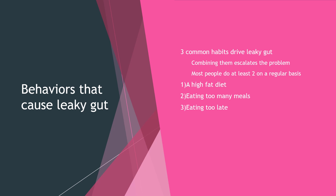A lot of people focus on diet as a primary driver of leaky gut, but I don't believe that's the case — I think a lot of this has to do with circadian rhythms. There are three common habits that drive leaky gut, and combining them escalates the problem. I'd almost guarantee that all of you do at least two of these regularly, if not every day. Those three things are: consuming a high-fat diet, eating too many meals — society tells us to eat every three hours, giving us five or six meals a day to 'rev up metabolism,' which it does not do, and actually causes problems including leaky gut — and finally, eating too late.